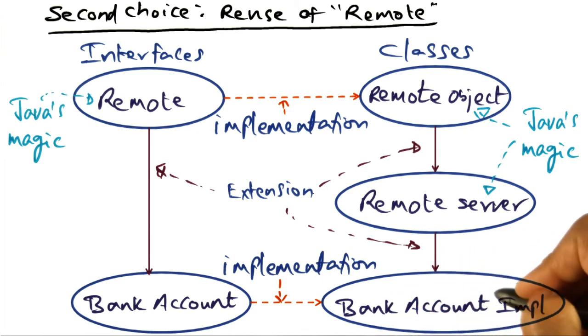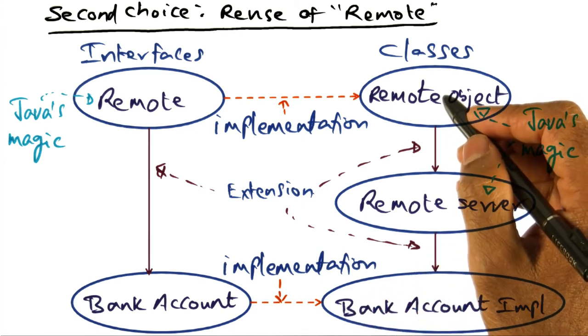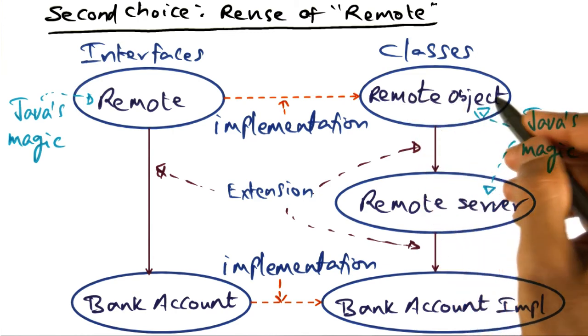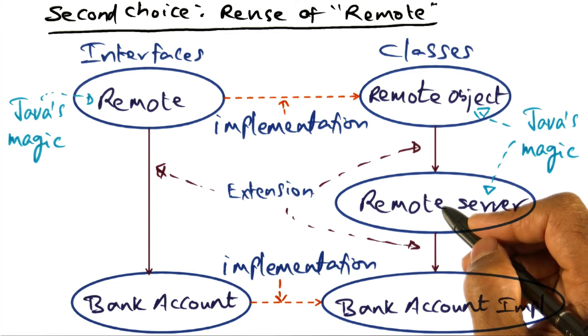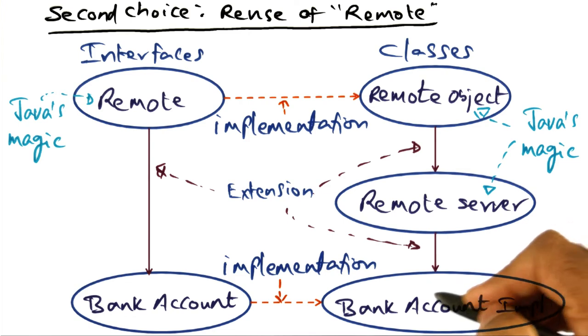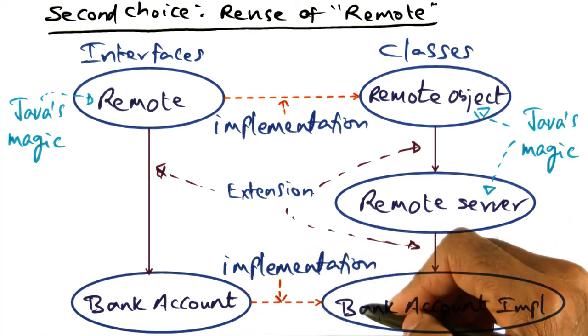Now when you've derived your bank account implementation object from the built-in distributed object model of Java, namely the remote object and the remote server classes, now when you instantiate your bank account implementation object, it becomes instantly visible to the network clients.